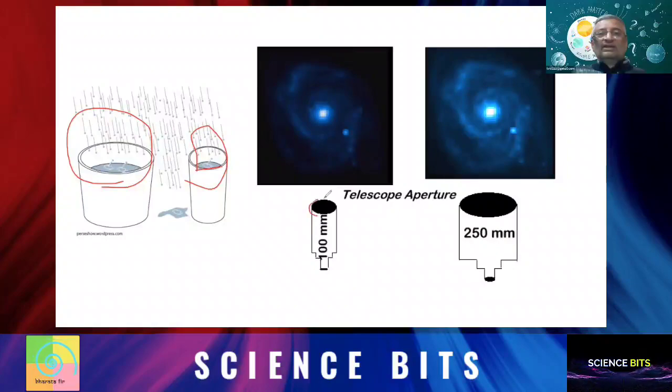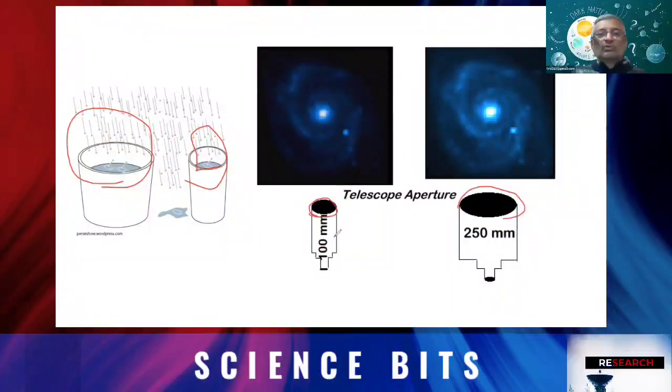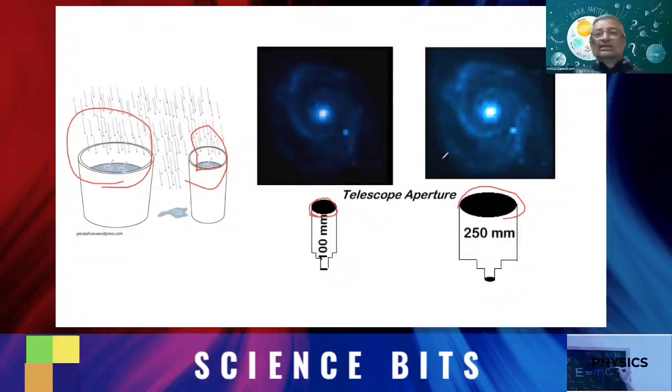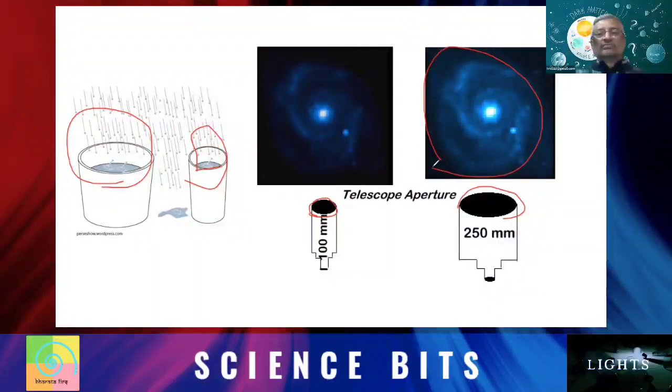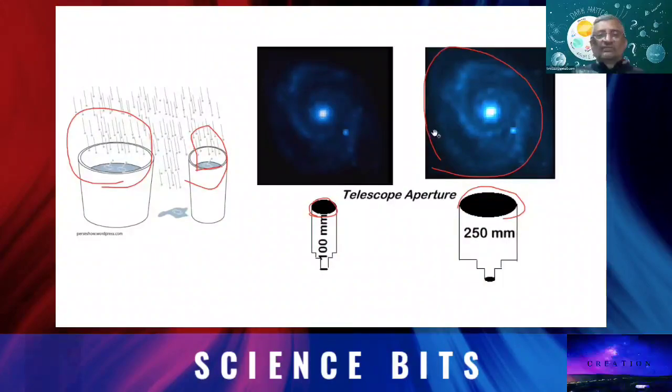In the same way, when the telescope mirror is larger, it can collect more amount of light, which means that it can see even dimmer objects. So that's the funda of a telescope.